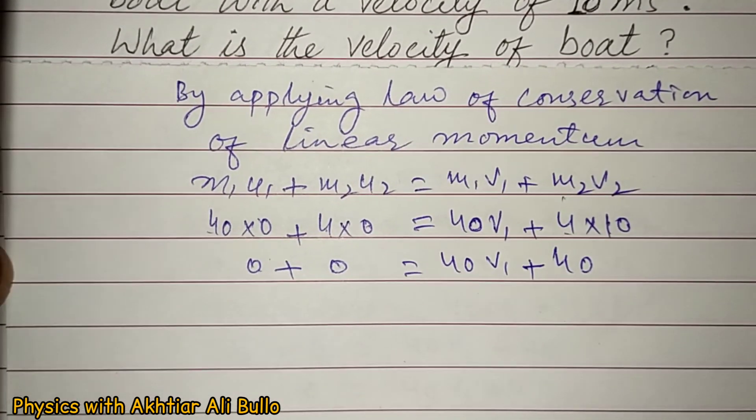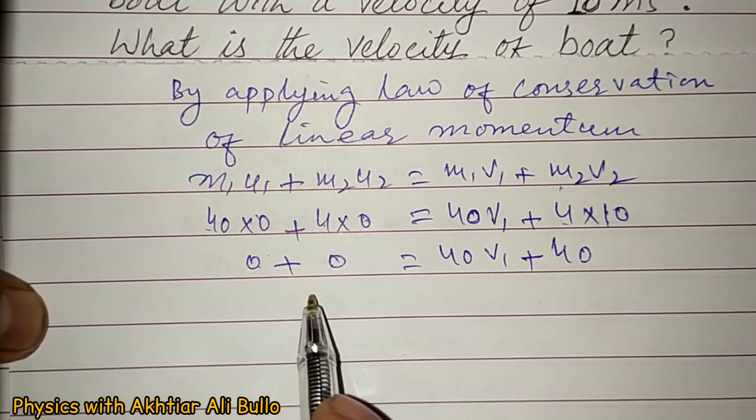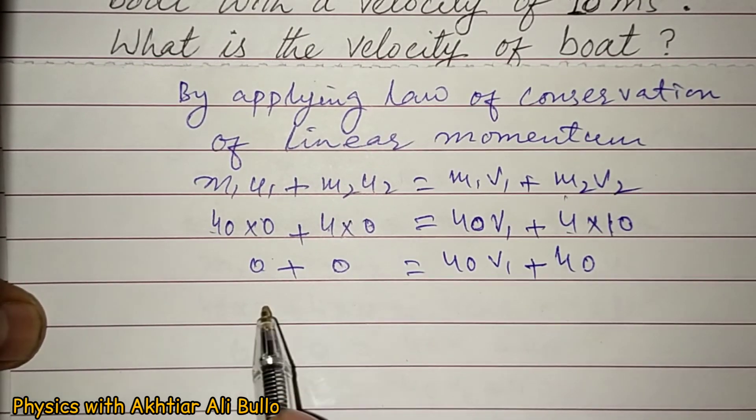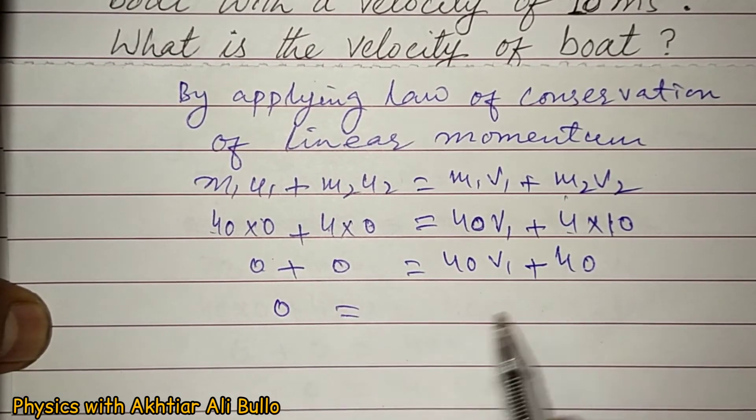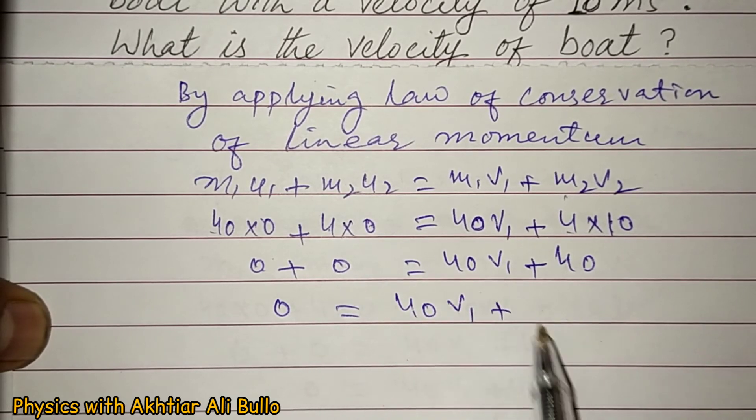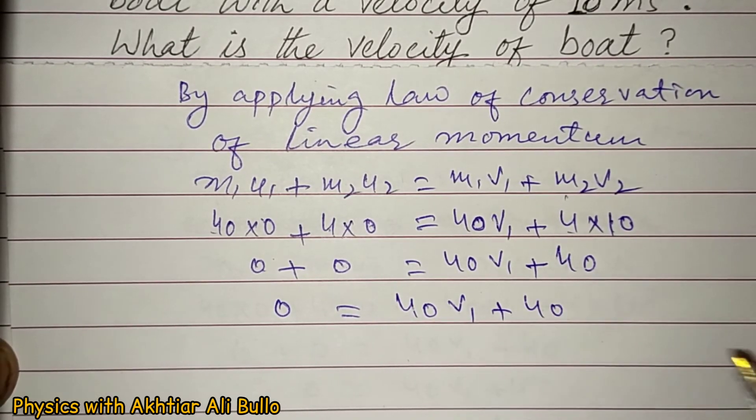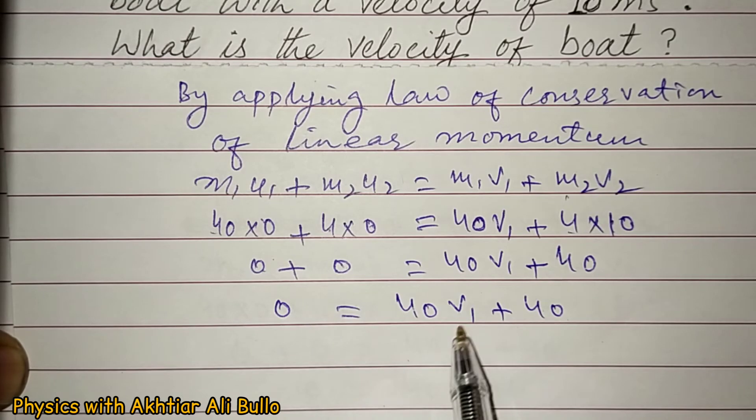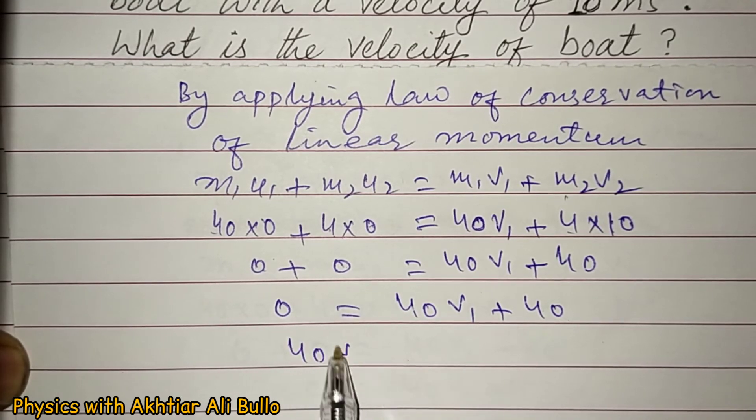So the velocity of boat will be obtained. 0 plus 0 will be equal to 0. 0 is equal to 40·v1 plus 40, so we have to find v1. 40·v1 is equal to minus 40.